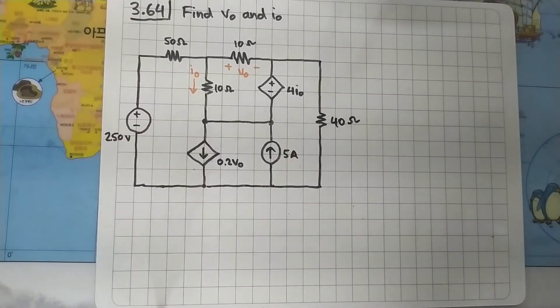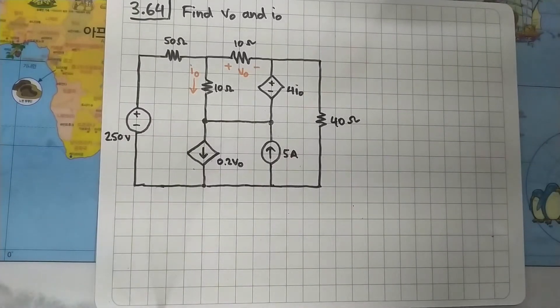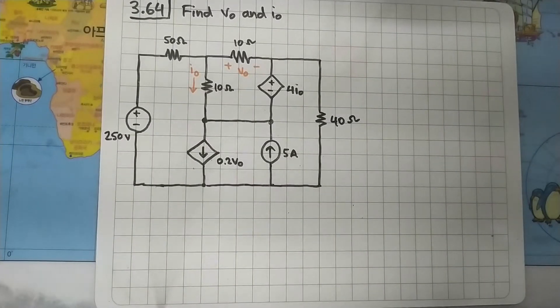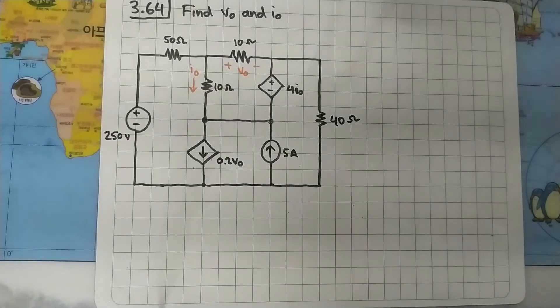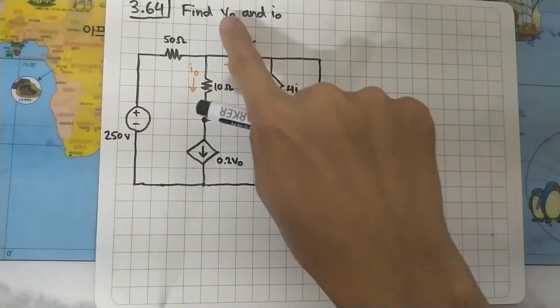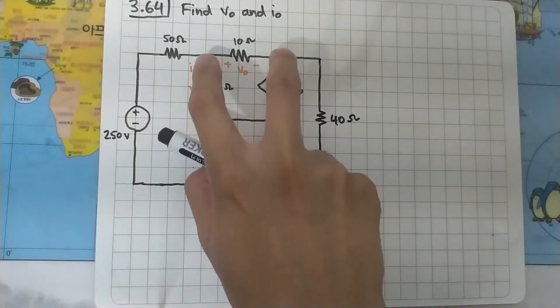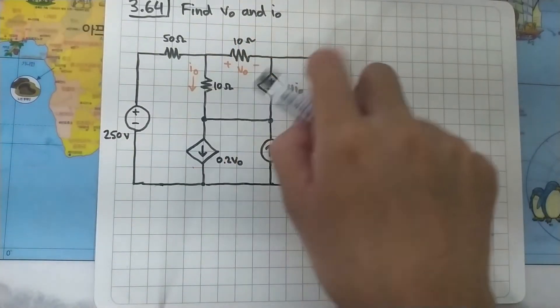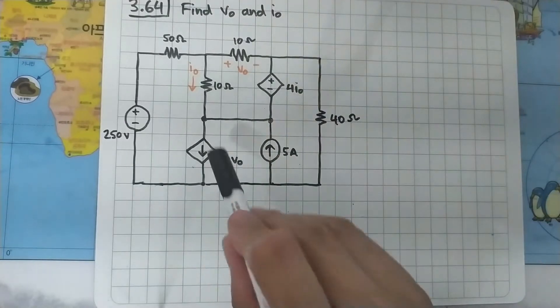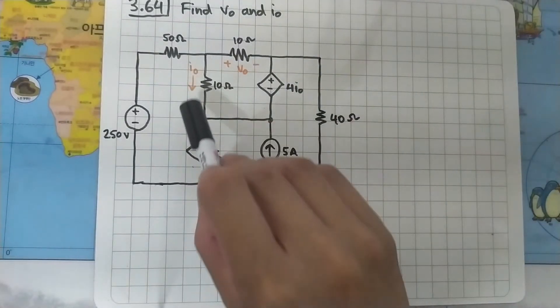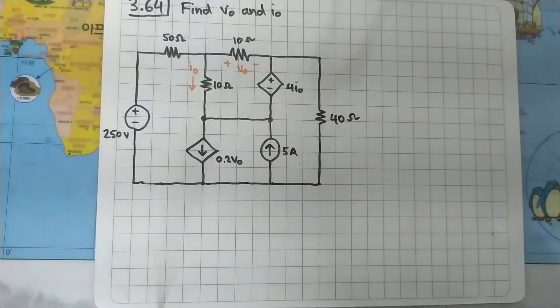We are going to solve problem 3.64 from Sadiku's book. The question is to find V0, which is the voltage across this resistor, and I0, which is the current flowing through this resistor.